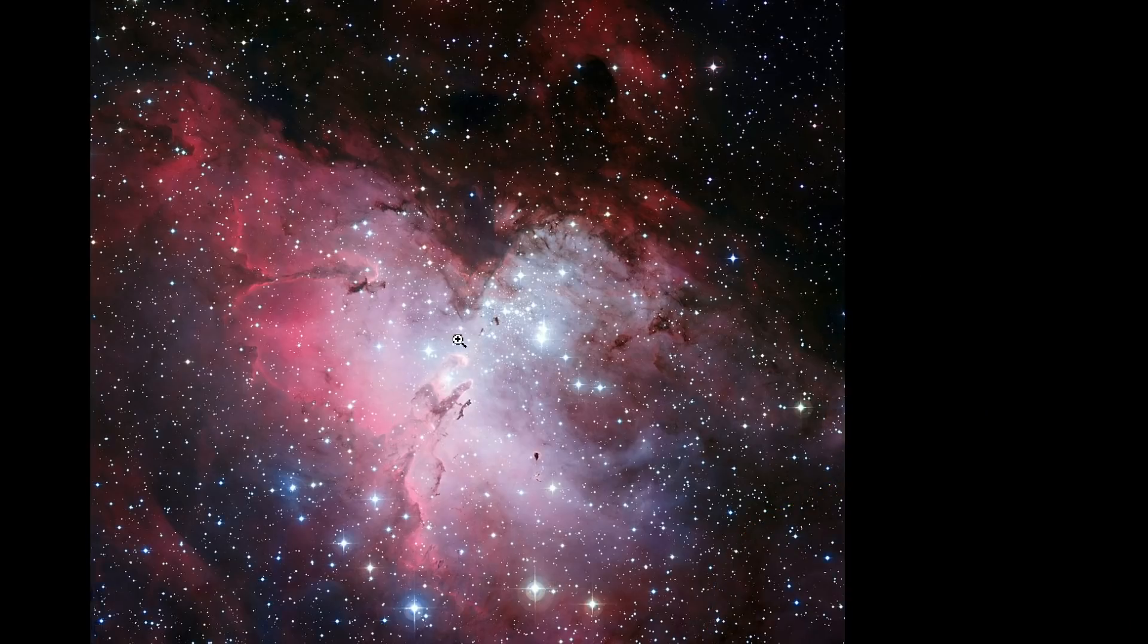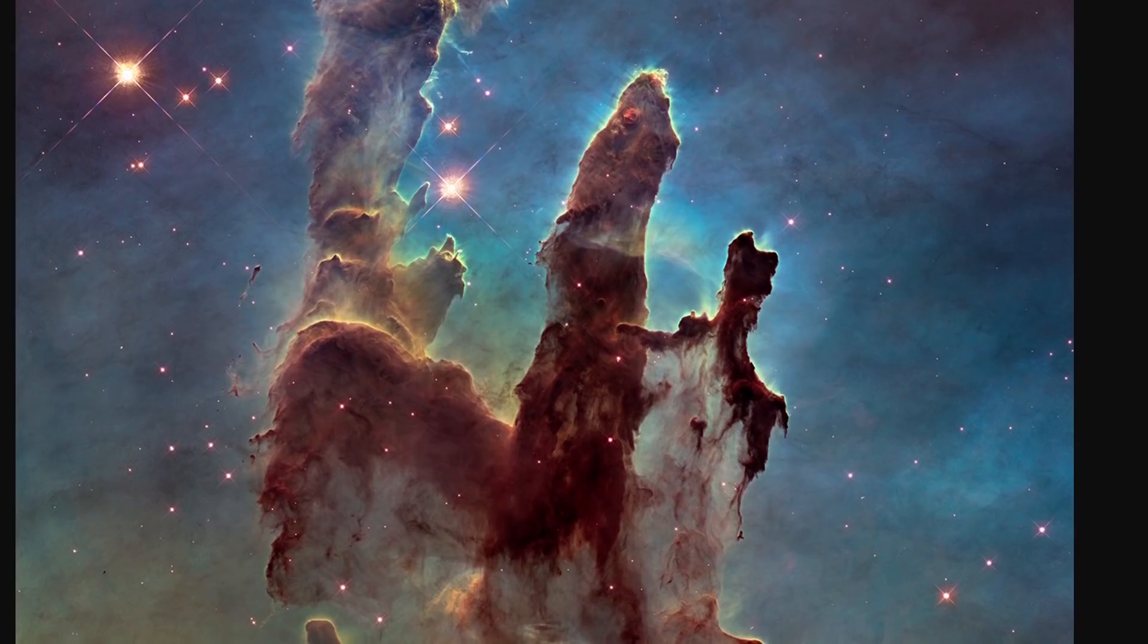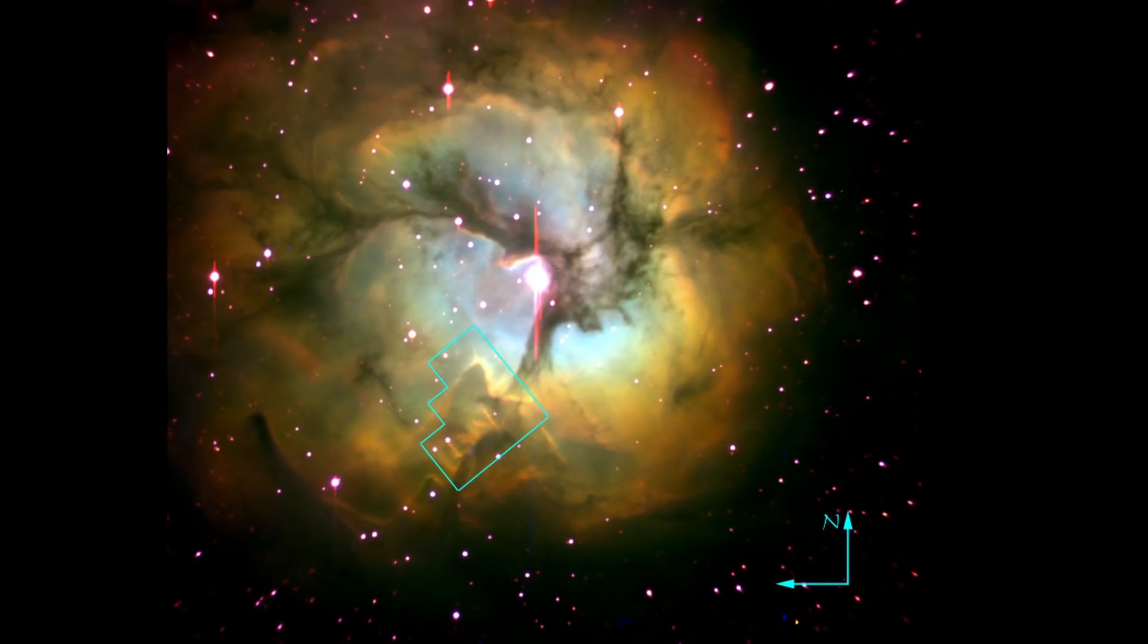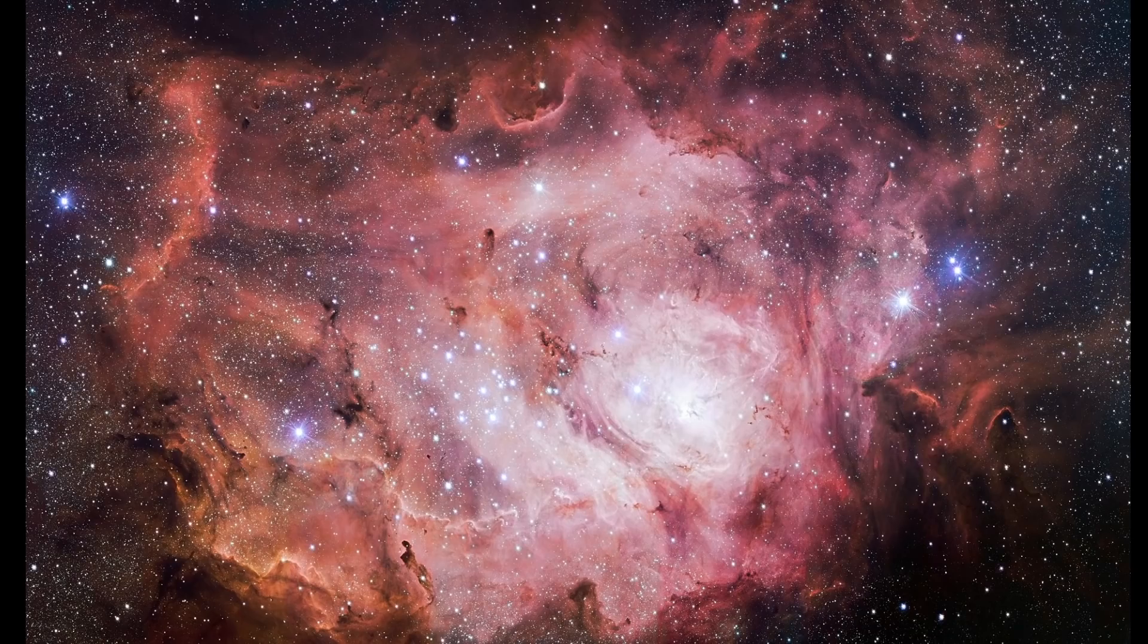For example, the very famous eagle nebula, that's actually famous for this right here, that contains the famous pillars of creation, is apparently inside this structure. With the other famous objects being the omega nebula, the triffid nebula, and lastly, the lagoon nebula that you see right here. With all four nebula being part of this unusual formation.